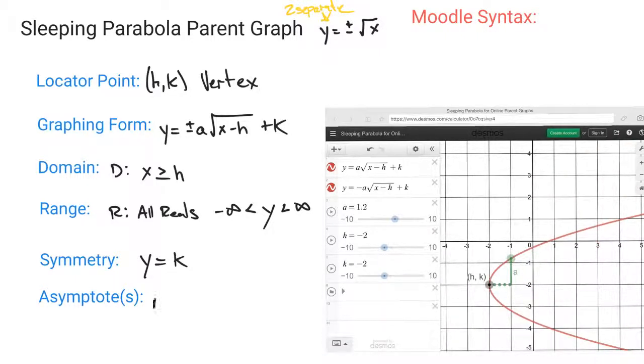There are no asymptotes here in this particular graph. We're not going towards one particular value. Because we are doing this as two separate equations, one key thing is that this is not a function. So it does not pass the vertical line test. You cannot use function notation to describe it, and you cannot write into your graphing calculator or into Desmos with just one single equation. It requires two.